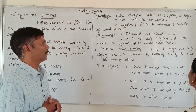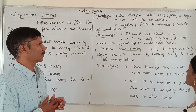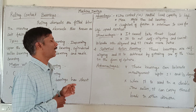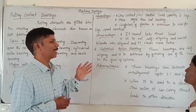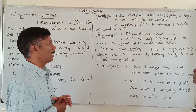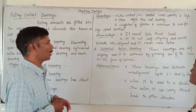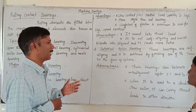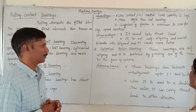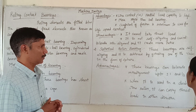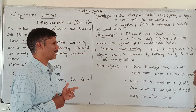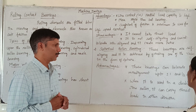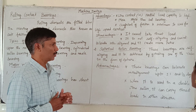Spherical roller bearing: these bearings are self-aligning, and it is achieved by grinding one of the races in the form of a sphere. The advantage is this bearing can tolerate misalignment up to plus or minus 1 and 1/2 degree. When used in a double roller configuration, it can carry thrust load in either direction.